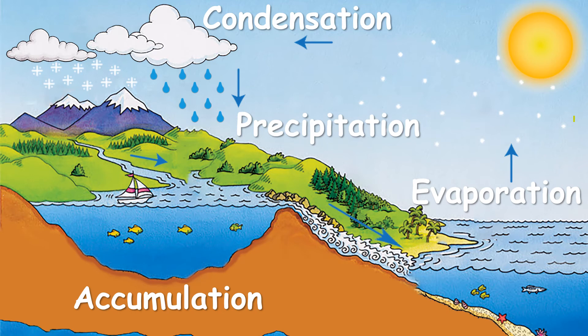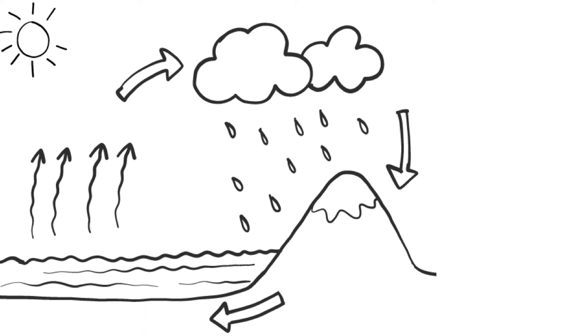In summary: evaporation turns water from liquid to gas; condensation turns the gas back into liquid, forming clouds; when the clouds are too heavy, precipitation occurs and the water falls down; then the water accumulates on the surface, which we call accumulation. Now let's test whether you understood and memorized all the processes.